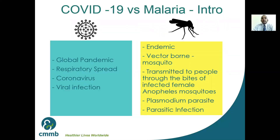To briefly introduce both: COVID-19 is a global pandemic spread respiratory-wise — when you cough or sneeze, the droplets and saliva carry the coronavirus. Under the microscope it looks like the rays of the sun, hence the name coronavirus. It is a viral infection. Malaria, on the other hand, is an endemic disease that is prevalent all the time. It is vector-borne, transmitted by the bite of the infected female Anopheles mosquito, which carries the parasite from person to person. The parasite is the Plasmodium parasite, making it a parasitic infection.